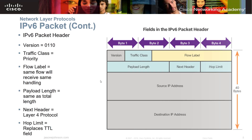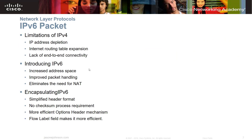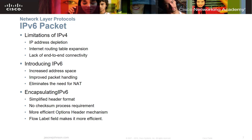The V6 packet is coming around because the V4 address pool has been depleted and there was a lack of end-to-end connectivity with IPv4. V6 has an increased address space — it's astronomical, really hard to wrap your head around. It has improved packet handling and eliminates the need for network address translation, so you don't have to do NAT tables anymore. Every device can have a V6 address. V6 features a simplified header format — there's no checksum process — and the flow label field makes it more efficient.